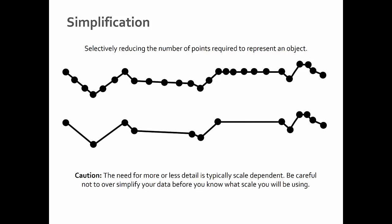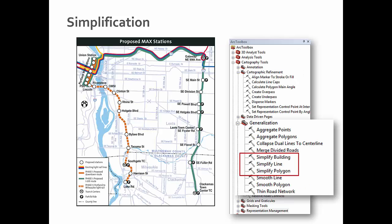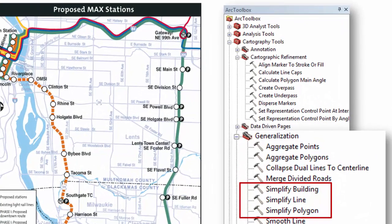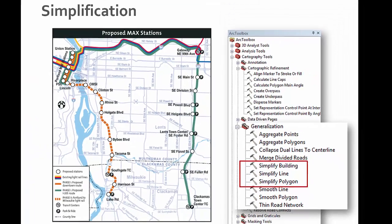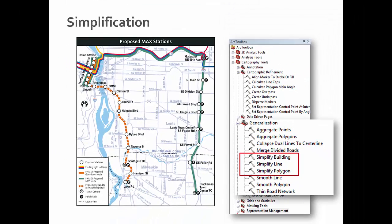You can see the difference — there's no real difference in the end result, but there's a major difference in the level of detail. This is really easy to do in ArcGIS as well as QGIS. In ArcGIS you'll find it in the Arc Toolbox under Cartography Tools > Generalization, where you can decide whether you're simplifying a building, a line, or a polygon.